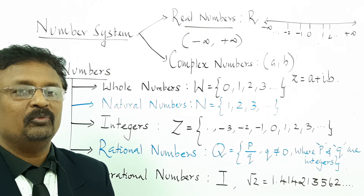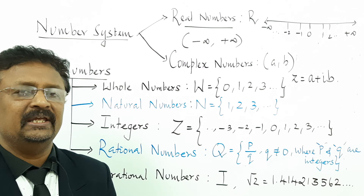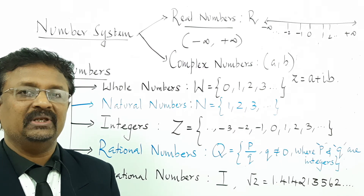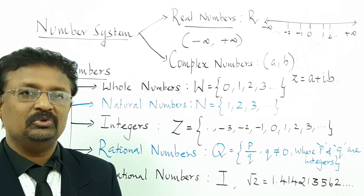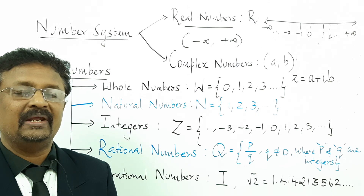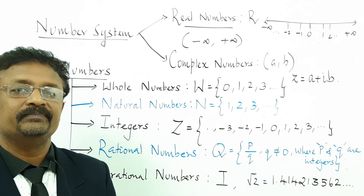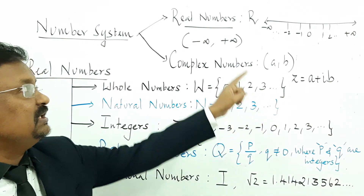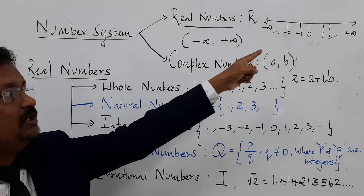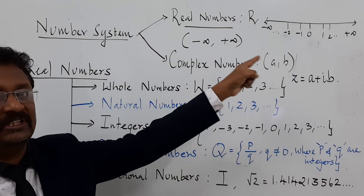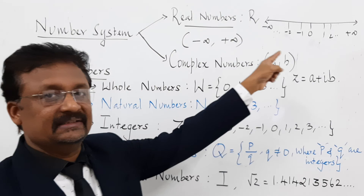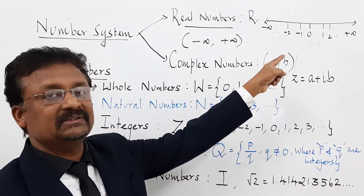What are real numbers? Any number lying between minus infinity to plus infinity is called real numbers. The number line from minus infinity to plus infinity is called the real axis.